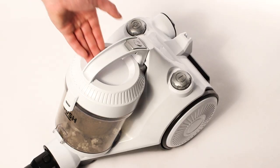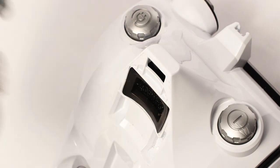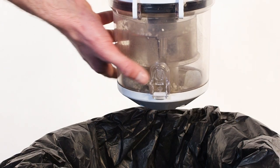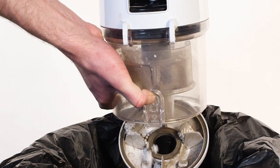Press the RELEASE button and lift off the dust container using the handle. Position the dust container over a bin and press the lever to open the base.